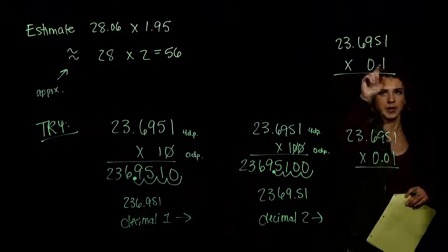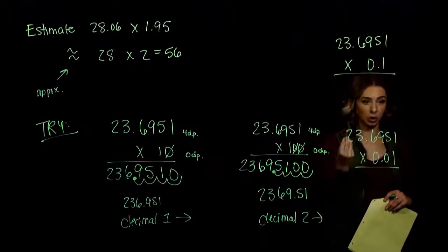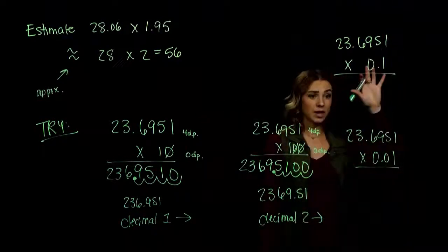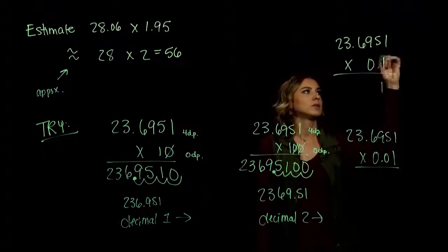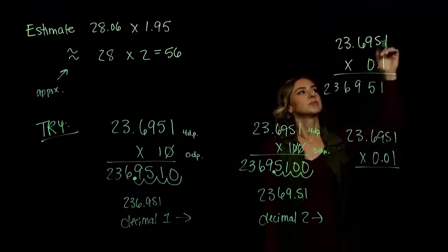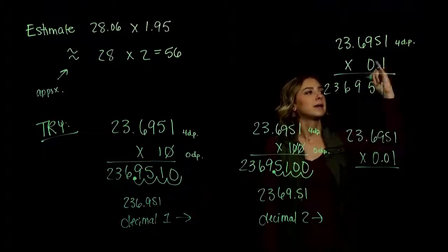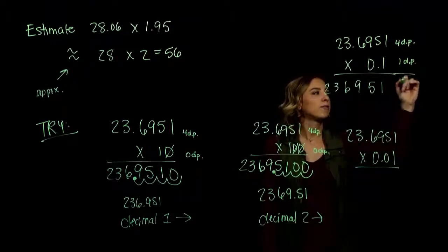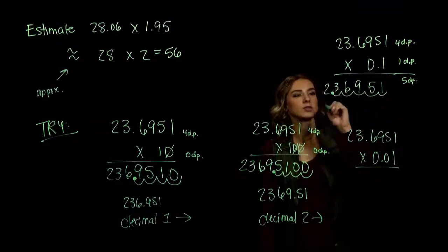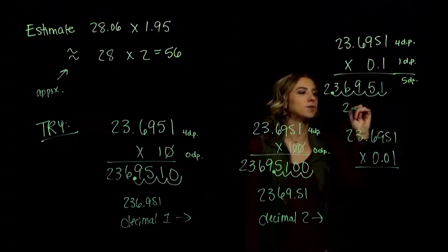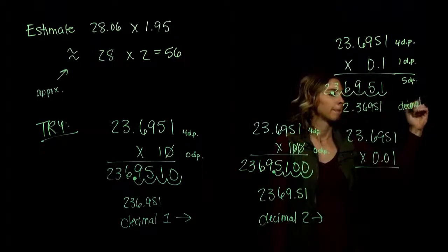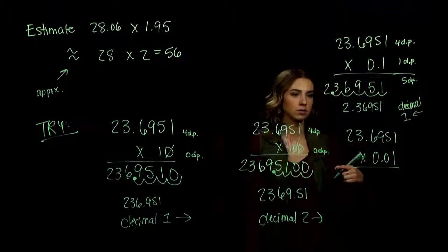When we multiply by 0.1, a fraction of a whole number, it should make it smaller. So our decimal point is going to travel to the left. We can still do the actual multiplication: 1 times 1, 5, 9, 6, 3, 2. We have four decimal places in 23.6951 and one in 0.1 — five total. Moving in five places gives us 2.36951. The decimal moved one unit to the left.